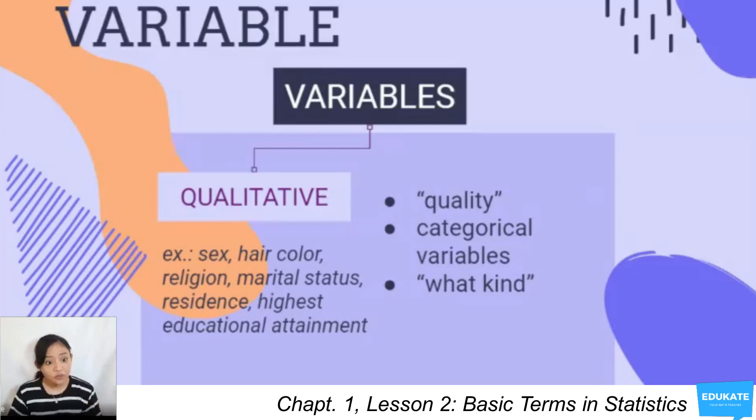So you have here an example: sex, hair color, religion, marital status, residence.